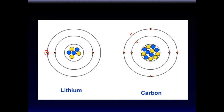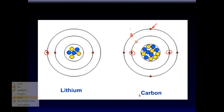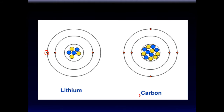The first orbital, closest to the nucleus, can only accommodate two electrons — any more would start repelling each other. The second orbital is much bigger and can accommodate up to eight electrons. Carbon has six protons and therefore six electrons: the first two go in the first orbital, and the remaining four go in the second orbital.